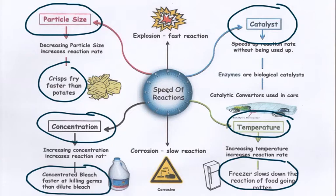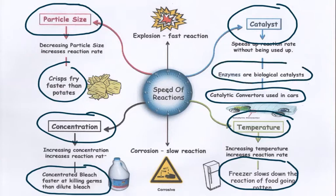Examples of catalysts are things like catalytic converters in car engines to turn noxious gases from the engine into less harmful things, or enzymes used in biological washing powders to speed up the reaction. Catalysts come in two types: heterogeneous, which means the catalyst is in a different state to the reactant, and homogeneous, which means the catalyst is in the same state as the reactants.